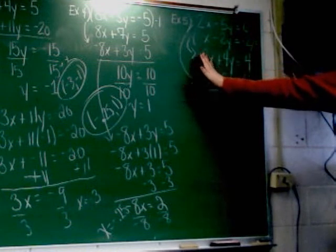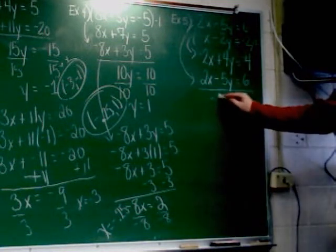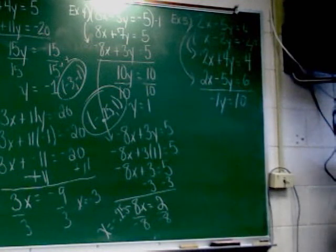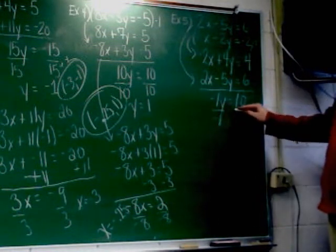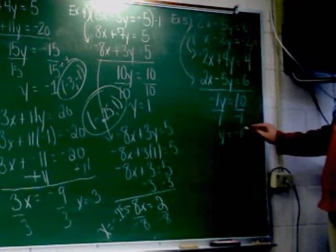I've got 4y and negative 5y. That's going to make negative 1y. And 4 and 6, which is going to make 10. So I'm going to divide now each side. What do I have to divide each side by? Negative 1. And that will give me y equals negative 10.